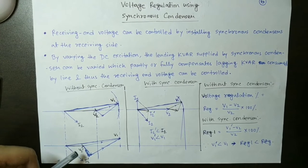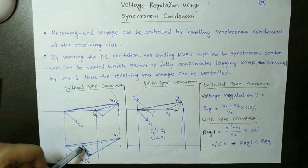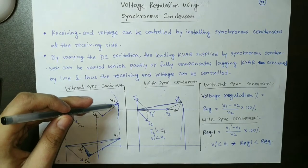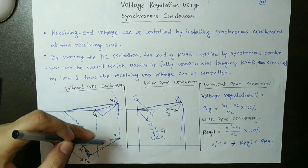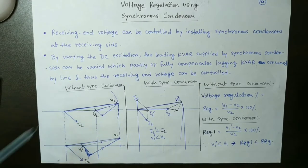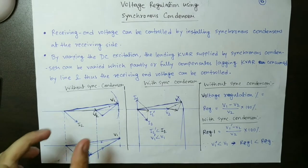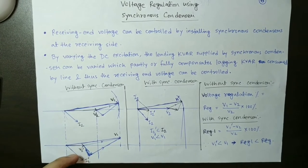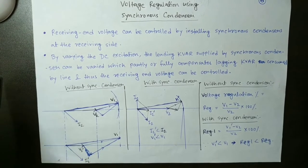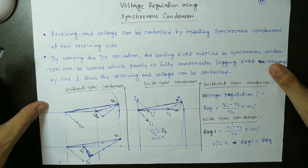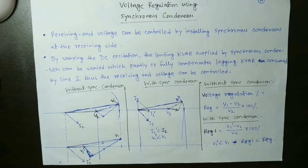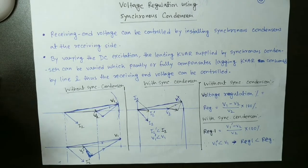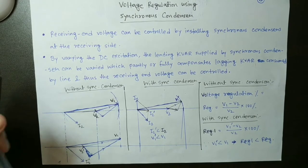If the supply voltage is constant for that short span of time when the load has already increased, your drops will be larger because current is increased. The overall impedance drop is now larger. As a result, your receiving end voltage will be much less — V2 was the initial receiving end voltage, but after load increases it becomes only V2 dash, which is almost half. This is how the phasor diagram proves that increasing load causes voltage reduction.